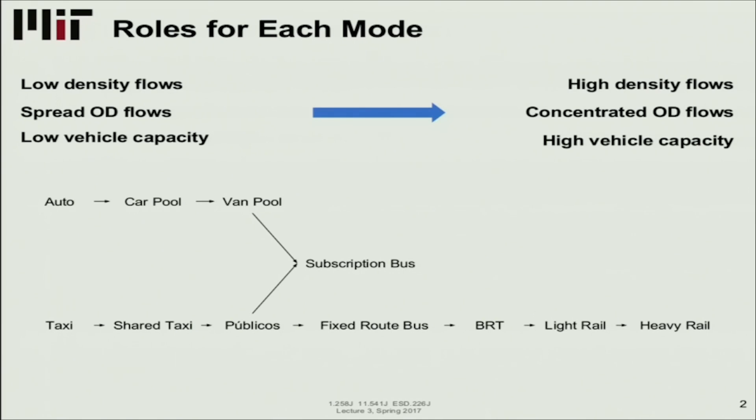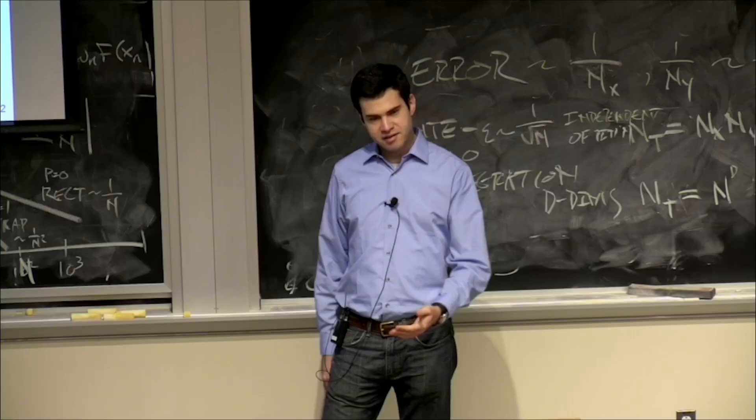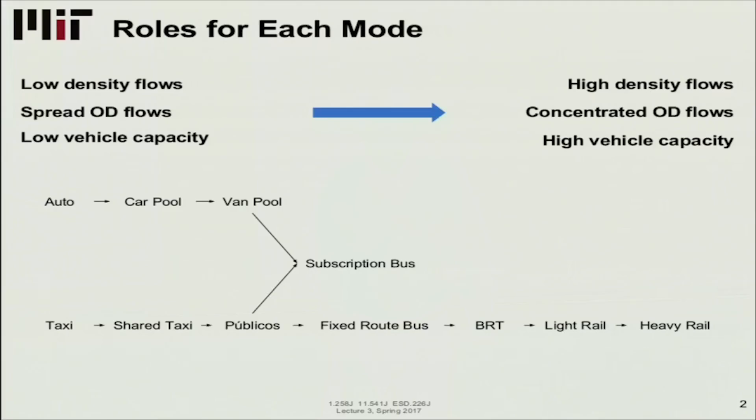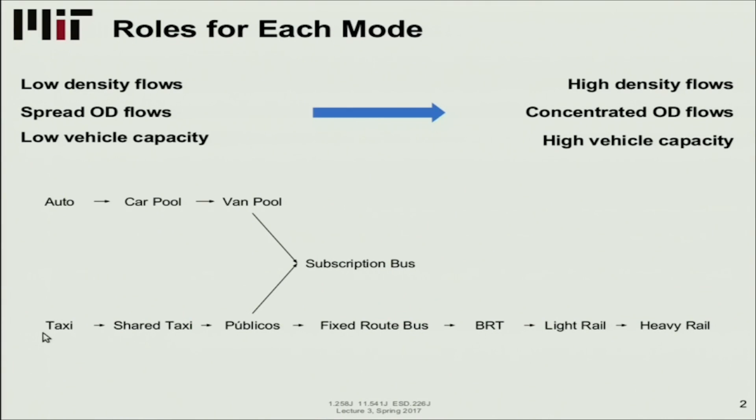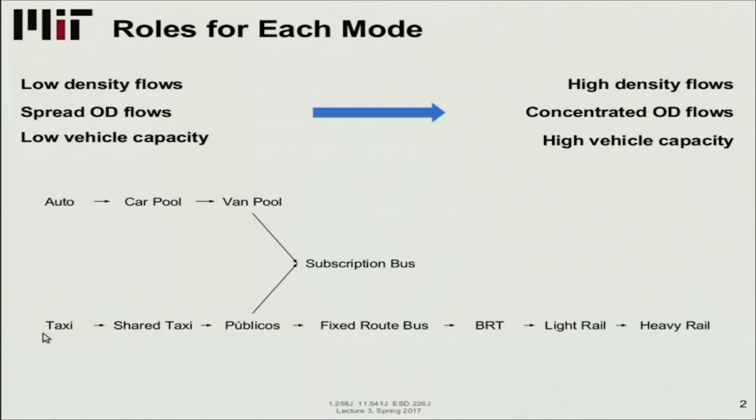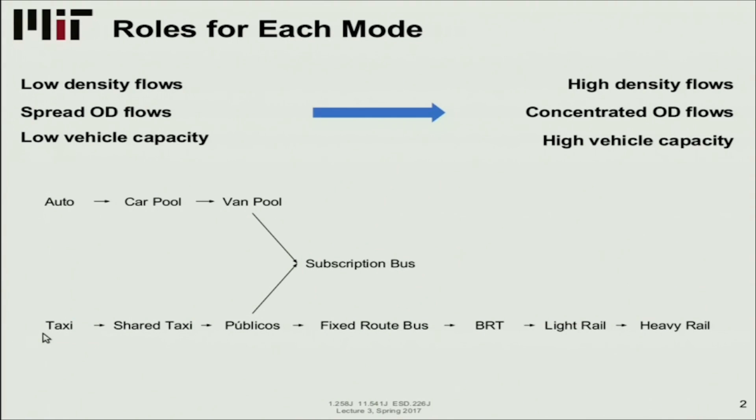We all know what the private auto is. It's a private mode often used by a single person, sometimes by a family, very low density, one OD pair being served. Then you go to carpool, where two people or more are in that same vehicle with multiple stops along the way. Vanpool, slightly larger vehicle, often private. This could be an arrangement between co-workers, requiring capacity higher than a normal car. So they get a van, and maybe one of them drives it or they hire a driver.